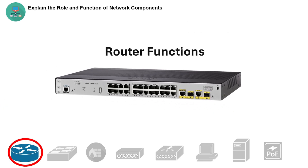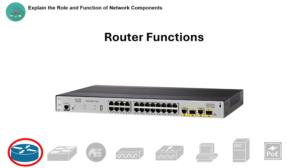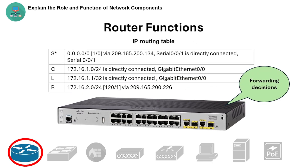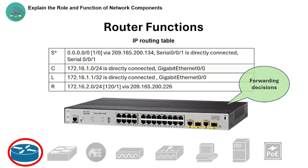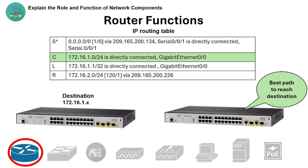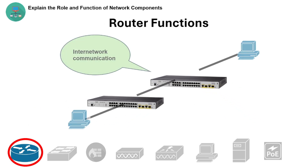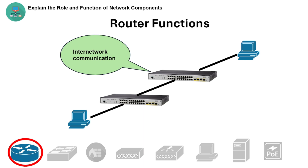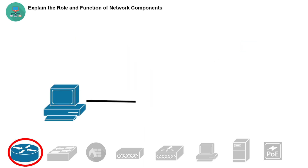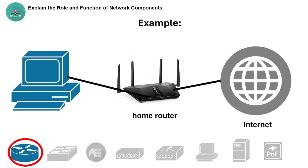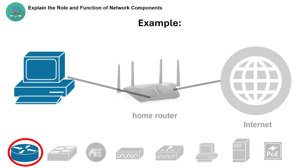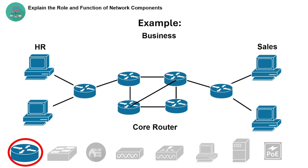Here are its functions: it makes forwarding decisions using the IP routing table, determines the best path to reach a destination network, and enables inter-network communication. For example, a home router connects your home network to the internet, and in a business, a core router connects different branches or departments together.